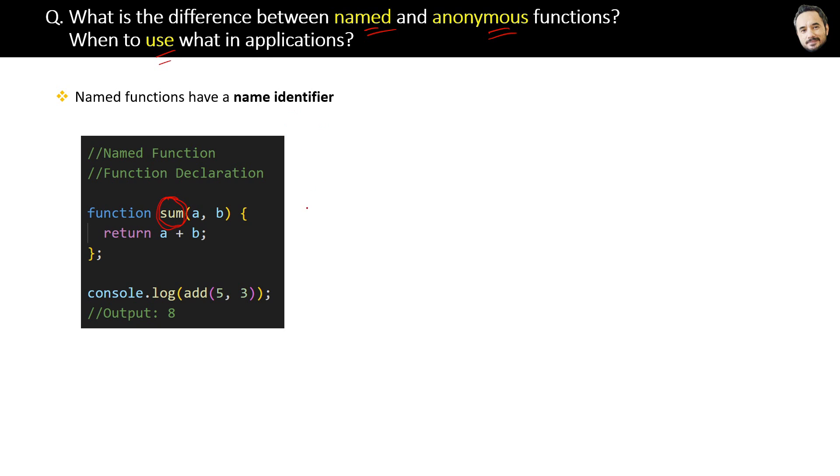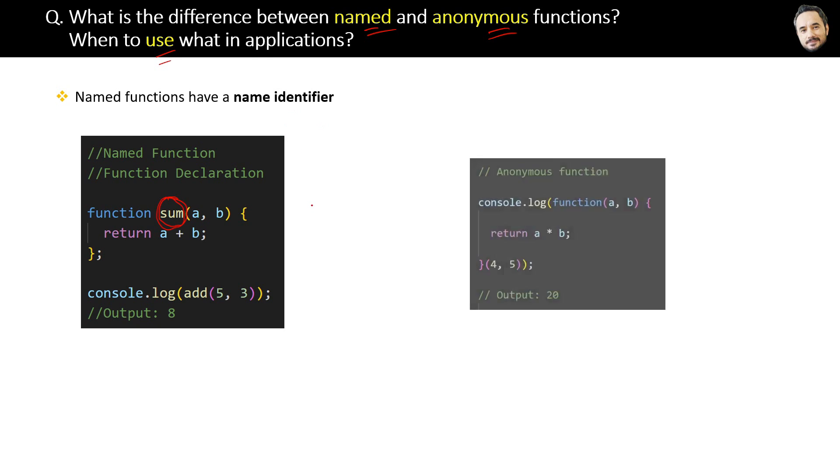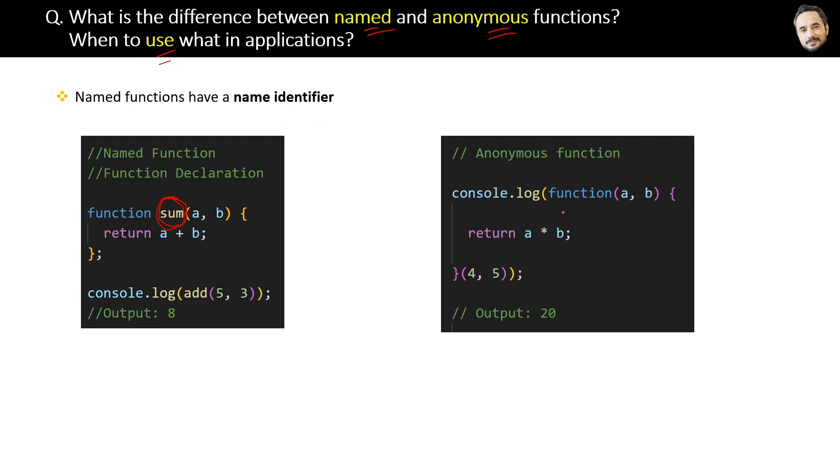So we have this sum as the name of the function and that's why we call them named functions. On the other hand, we have anonymous functions in JavaScript like this one inside the console.log. Here we have one function but it does not have any name. That's why we call it anonymous functions.